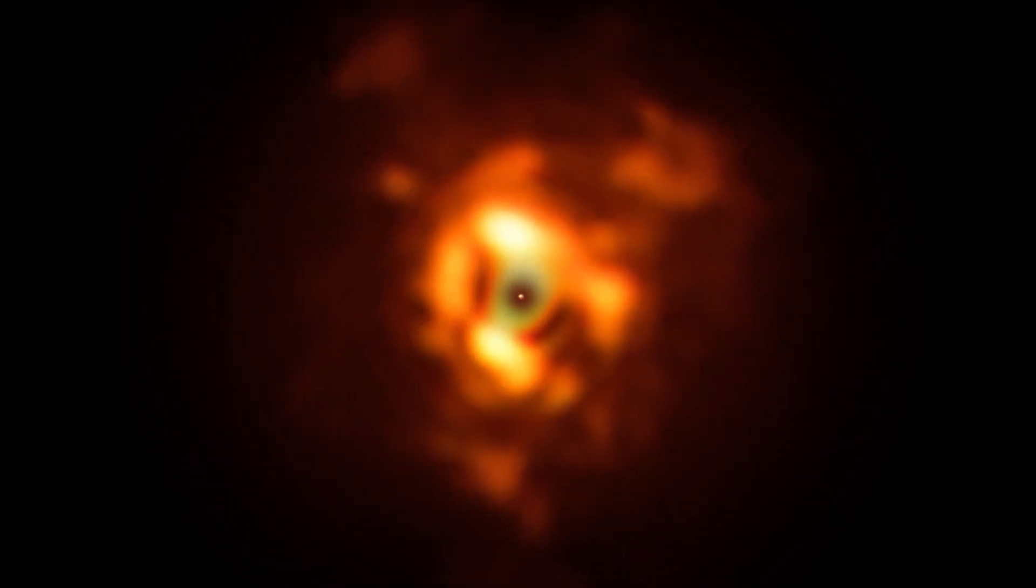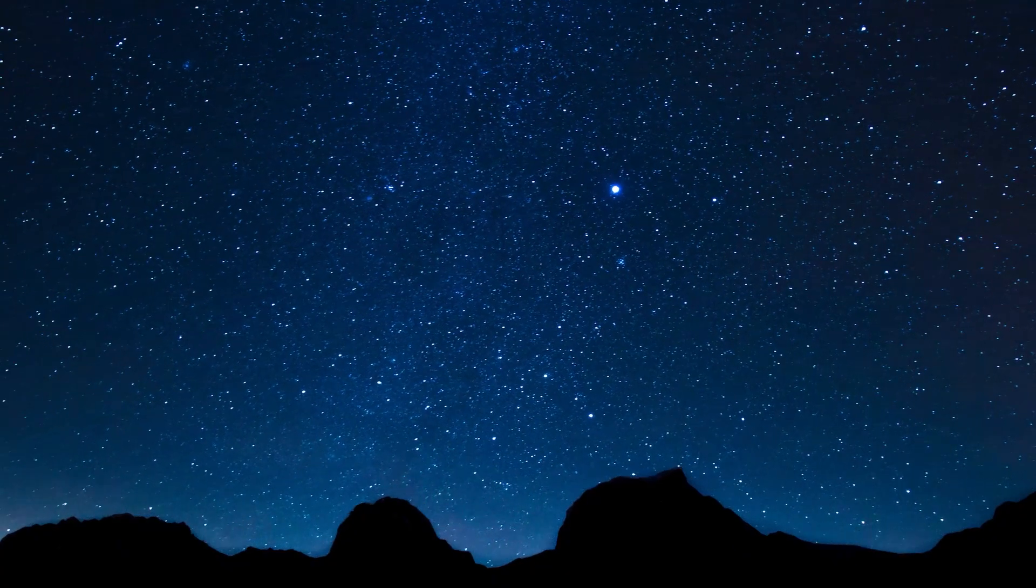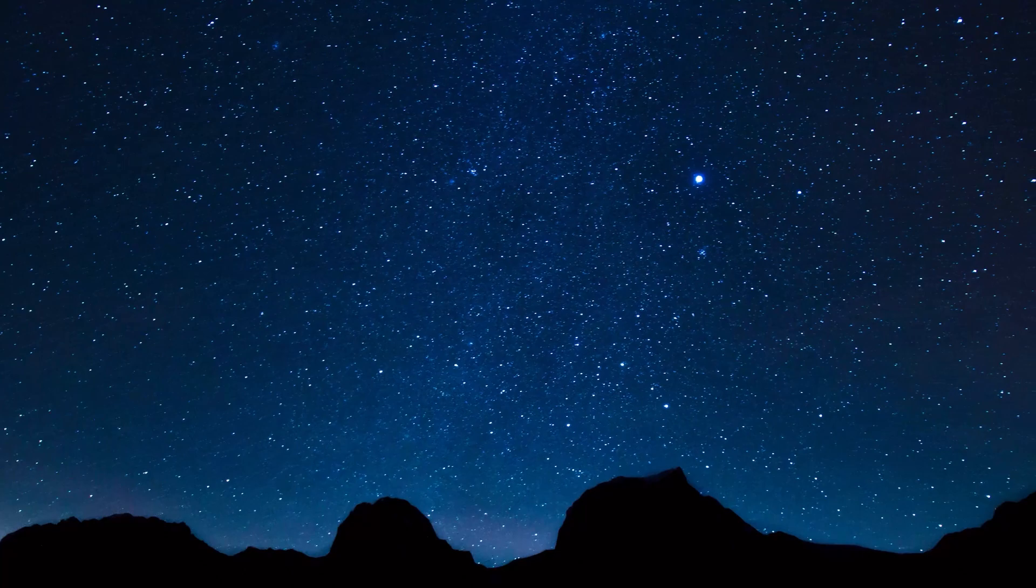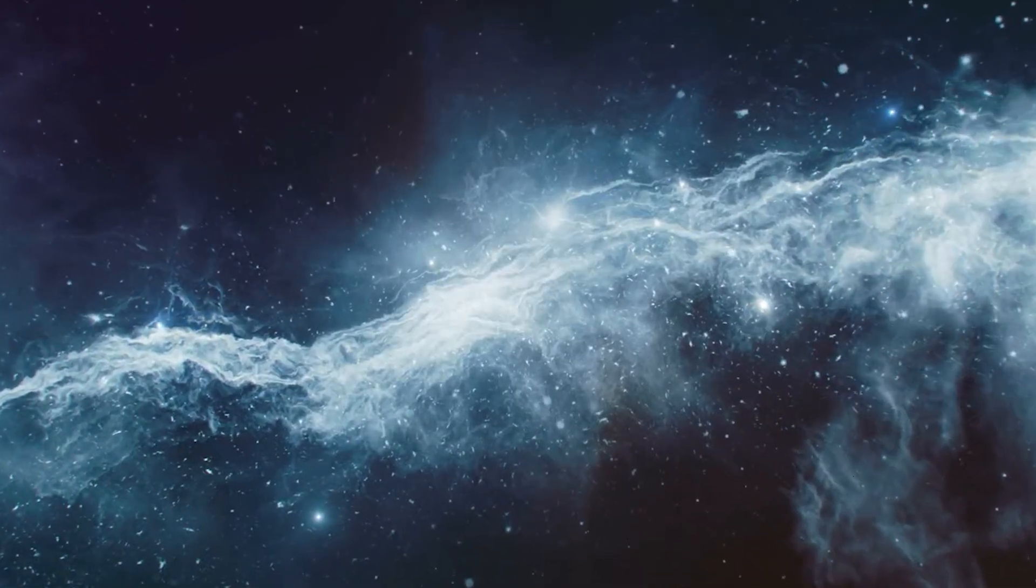One theory is that Betelgeuse might have undergone a violent and energetic event, leading to the sudden burst of light. Stellar flares, eruptions, or even massive convective activity within the star's outer layers are among the possible explanations being explored. These phenomena, though common in smaller stars, are rare in supergiants like Betelgeuse, making this event even more remarkable.